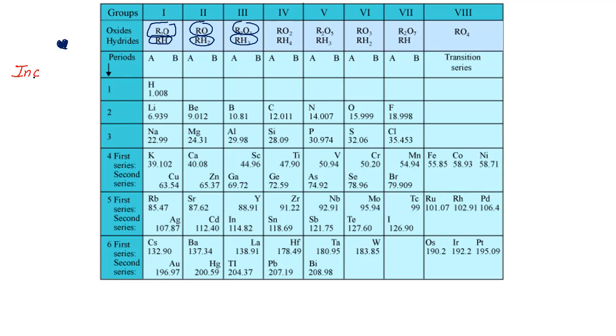Mendeleev said that when you start arranging the elements in the order of their increasing atomic masses, first thing is you have to arrange the elements in the order of their increasing atomic masses. Then, when you do so, the elements with similar property, they will get repeated after certain regular interval.